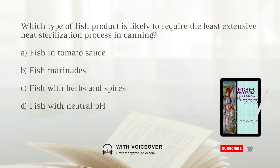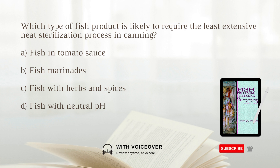Which type of fish product is likely to require the least extensive heat sterilization process in canning? A. Fish in tomato sauce. B. Fish marinades. C. Fish with herbs and spices. D. Fish with neutral pH. Answer: B. Fish marinades. Fish marinades fall into the high-acid pH group, which requires less extensive heat treatment due to the acidic environment preventing the growth of certain microorganisms.